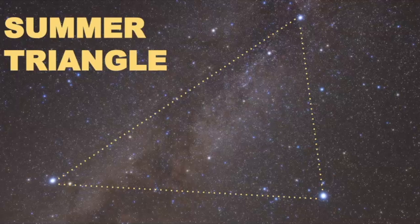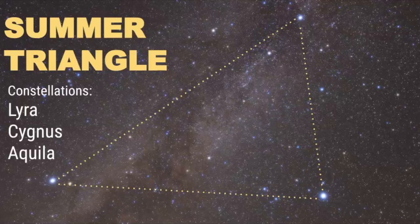If you want to see those videos, be sure to go check them out. But this is the pattern of the summer triangle, and they connect the three constellations known as Lyra, Cygnus, and Aquila.